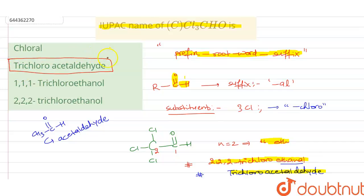So if we look at the options, our option second is correct, that is trichloroacetaldehyde. In option third and fourth we are having 'ol' which is indicating the functional group OH, but in this case we are not having OH so these two options are incorrect.